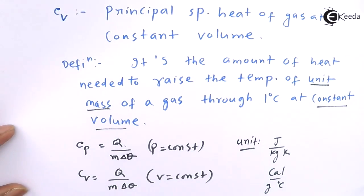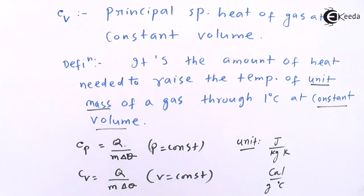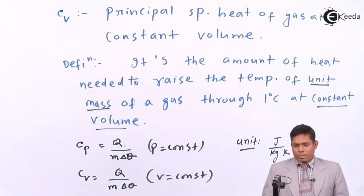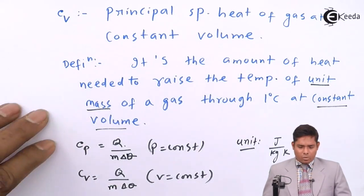This is the principle specific heat. Now, instead of one unit mass of gas — one gram or one kilogram — if we take one mole of gas and bring about the same change in temperature by one degree, that specific heat is called molar specific heat because we are using one mole of gas. We denote molar specific heat with capital letters: capital Cp and capital Cv.